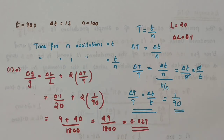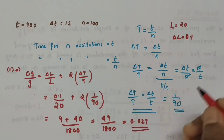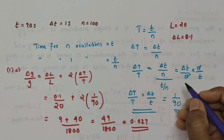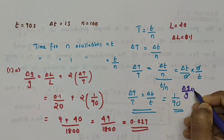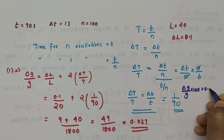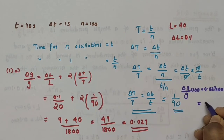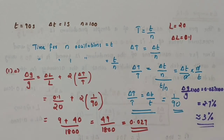The relative error in the measurement of acceleration due to gravity is δg/g = 0.027. The percentage error in g is δg/g × 100 = 0.027 × 100 = 2.7%, which can be approximated to 3%.